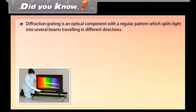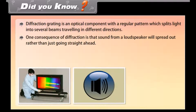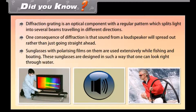Did you know? A diffraction grating is an optical component with a regular pattern that splits light into several beams traveling in different directions. One consequence of diffraction is that sound from a loudspeaker spreads out rather than going straight ahead. Sunglasses with polarizing films are used extensively while fishing and boating, designed so one can look right through water. Reflection of waves from sea walls or other barriers can cause an interference pattern called a standing wave, in which crests do not move laterally.